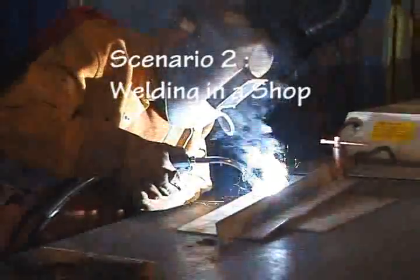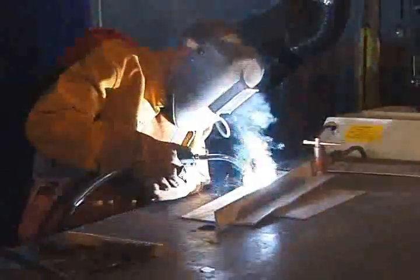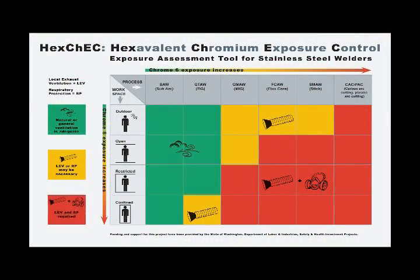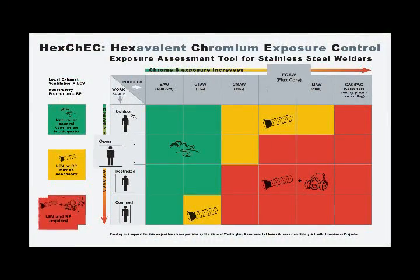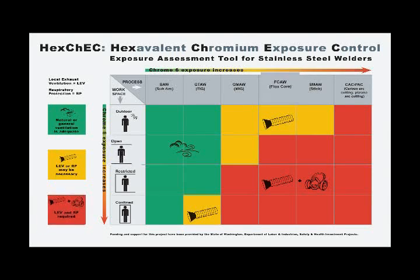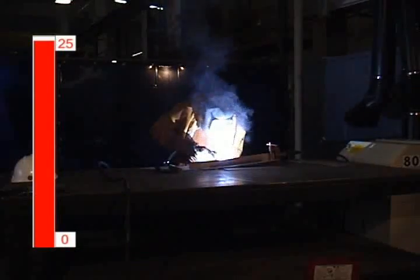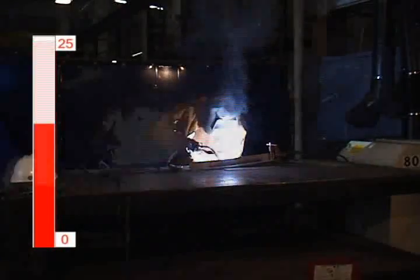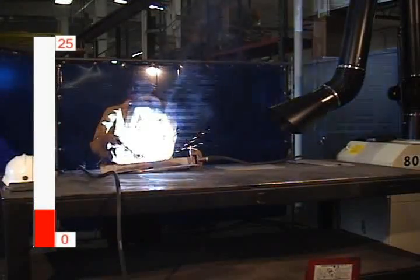In our second scenario, we'll move inside to a large open welding shop where Mike is flux core arc welding and Justin is MIG welding. Checking the exposure assessment tool, we know that Mike is likely to be exposed to a lot of welding fumes and high Chrome 6 concentrations. Without LEV in place, even in an open space, Mike has a high welding fume exposure. Cross drafts in the shop explain some of the variation we see in Mike's exposure. Mike is now using LEV, but he's not using it very effectively.